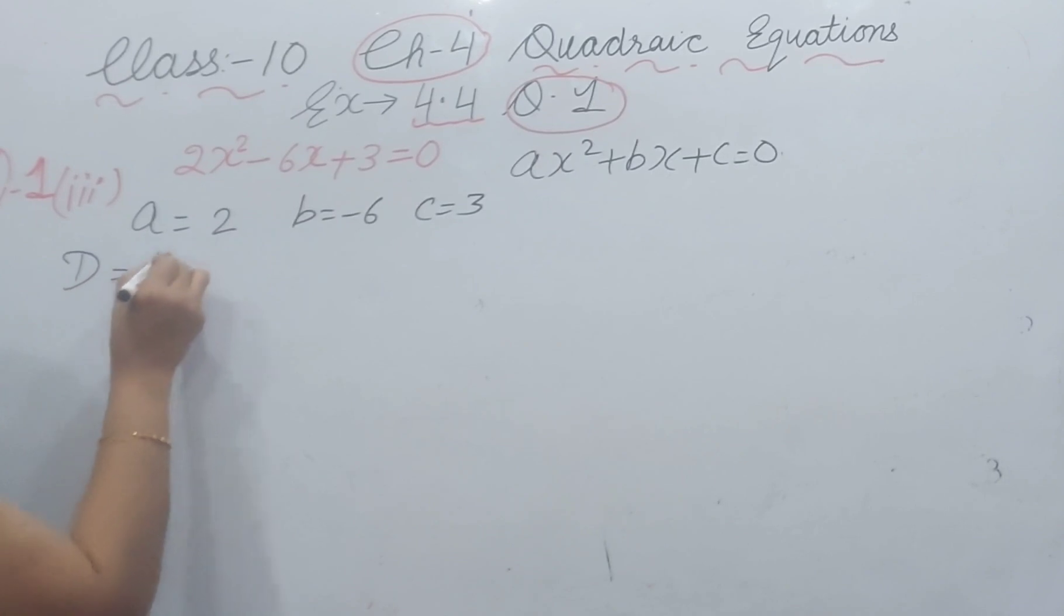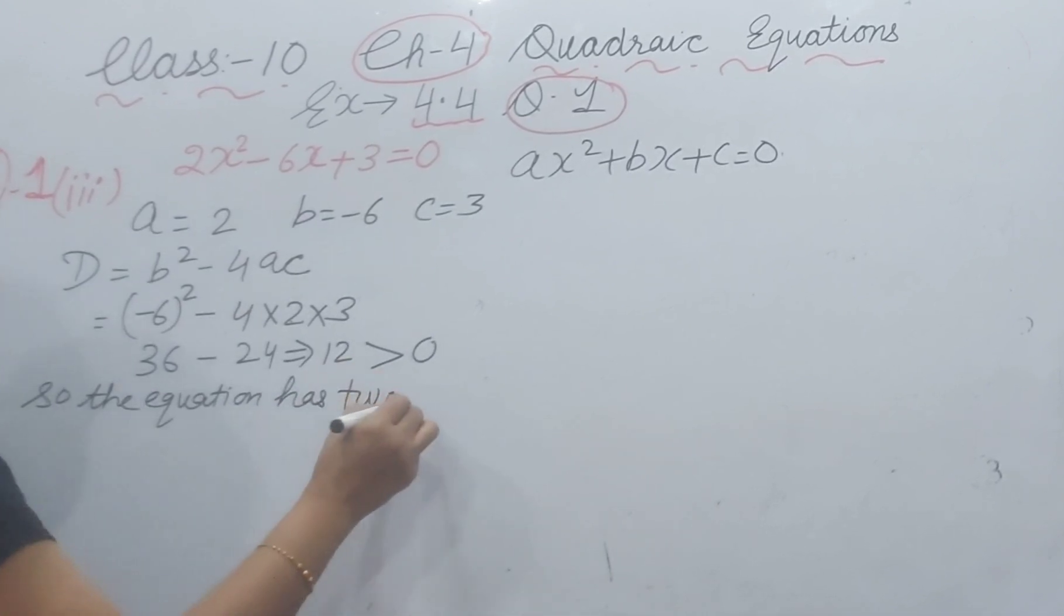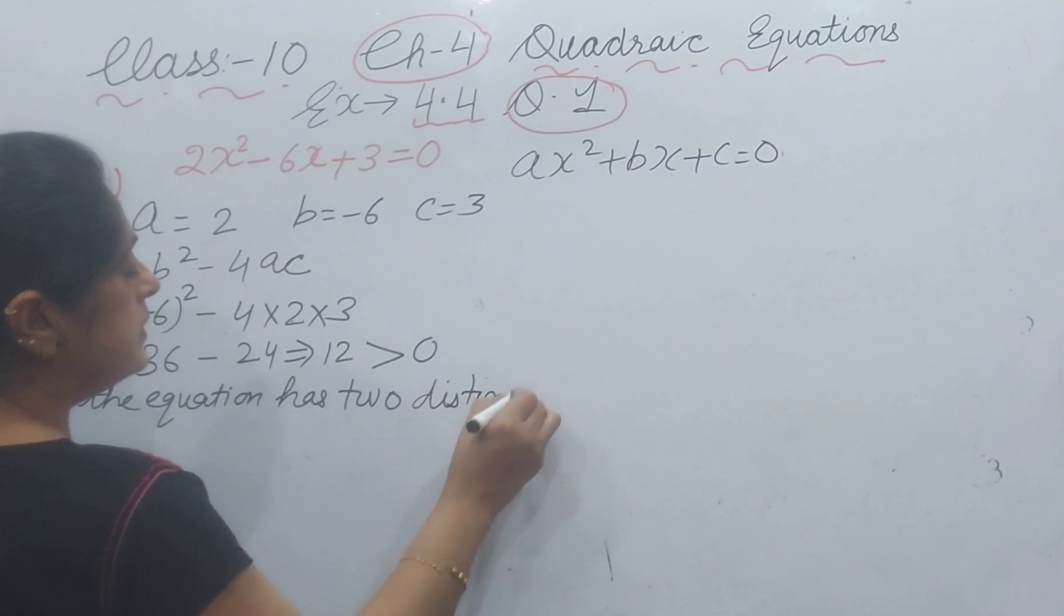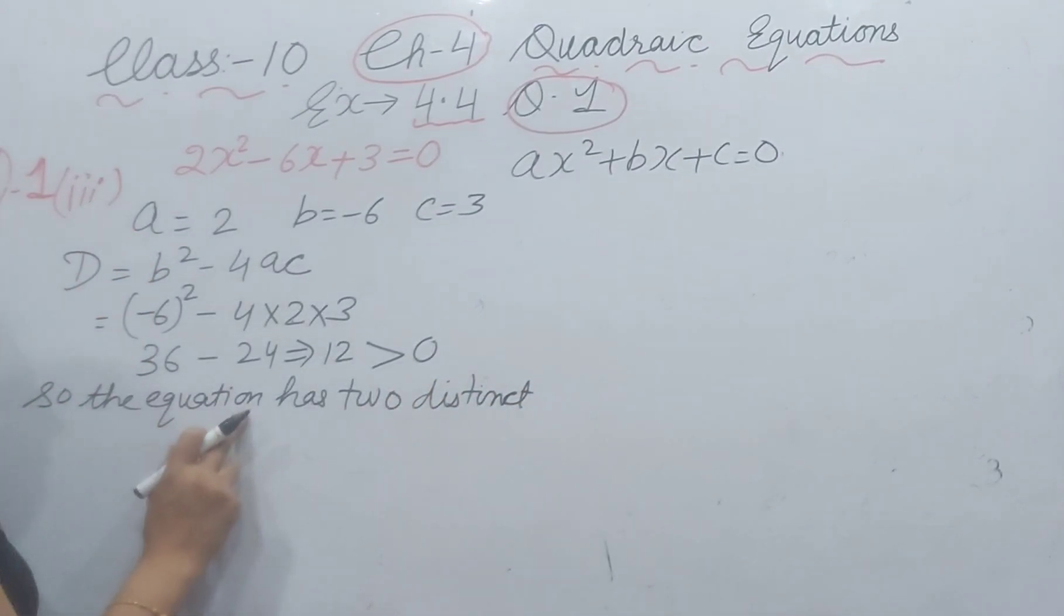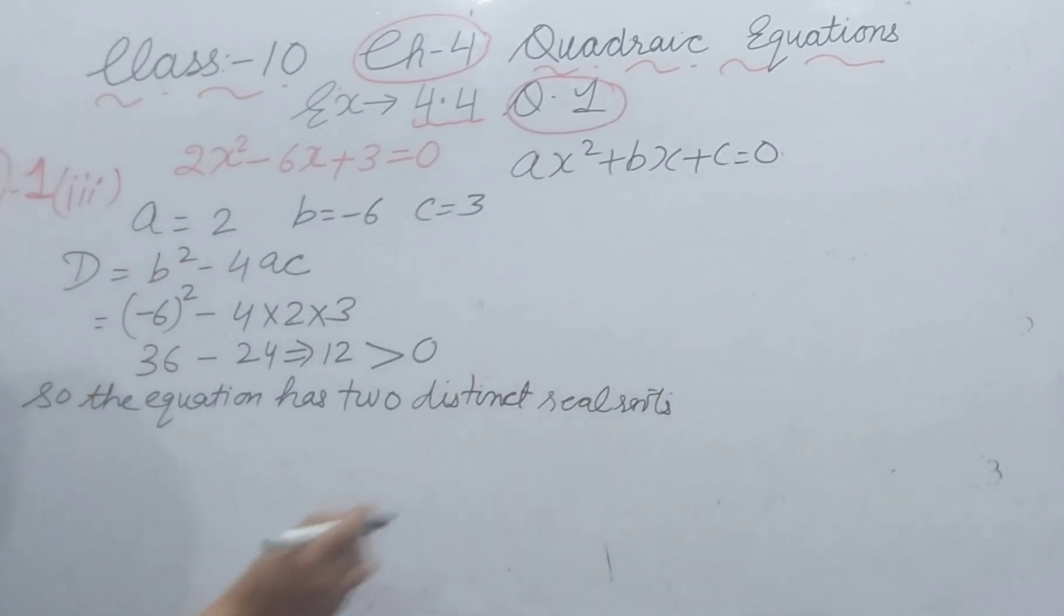We will find D = b² - 4ac. b is -6 whole squared minus 4 into 2 into 3. (-6)² = 36, 4 times 2 times 3 = 24. That equals 36 - 24 = 12, and 12 is greater than 0. So the equation has two distinct real roots.